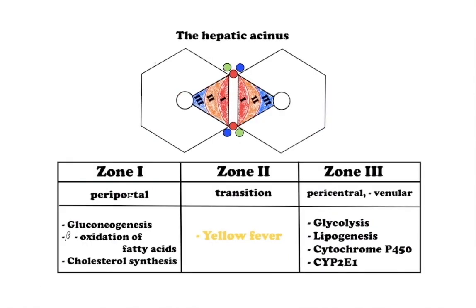Hepatocytes closest to the arterial supply in zone 1 (periportal zone) are the best oxygenated, while those farthest from the arterial supply have the poorest oxygen supply. Cells in zone 1 are the first to potentially absorb blood-borne toxins from the small intestine and are affected first by viral hepatitis. Zone 1 hepatocytes are specialized for oxidative liver functions such as gluconeogenesis, beta-oxidation of fatty acids, and cholesterol synthesis.